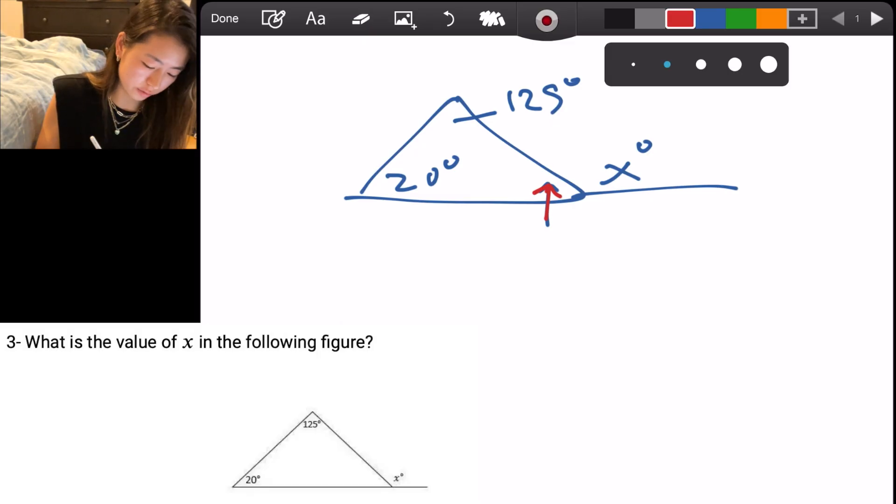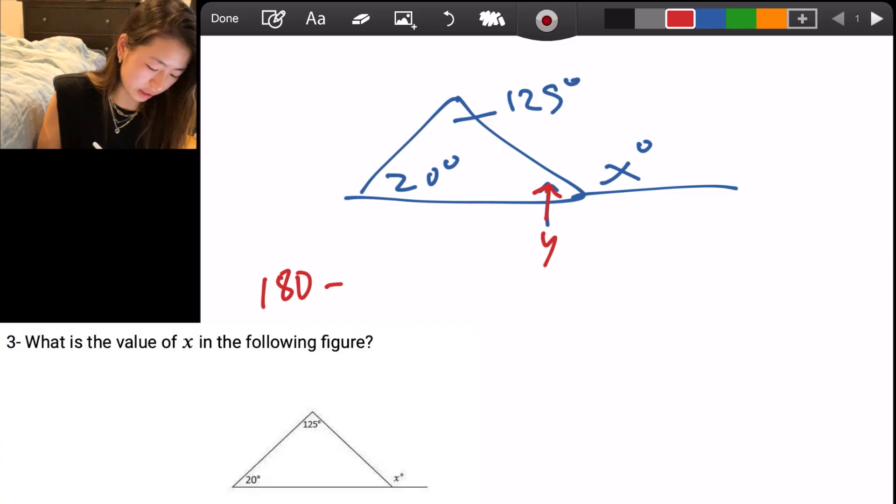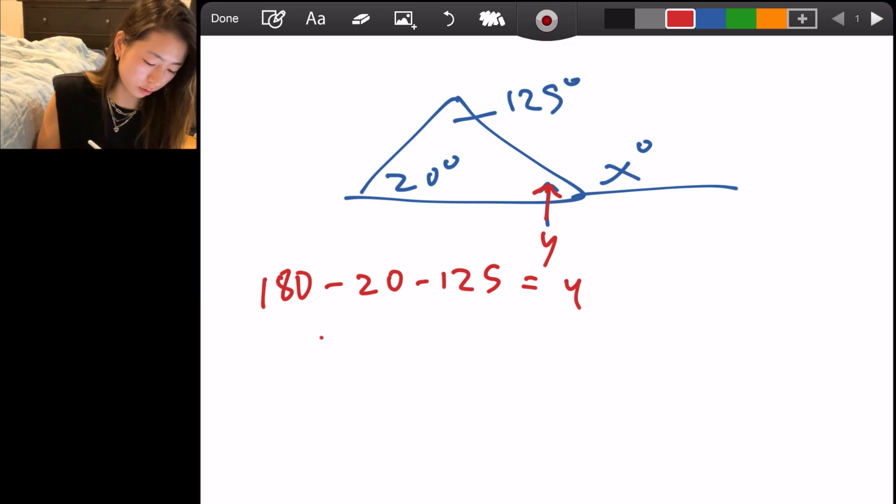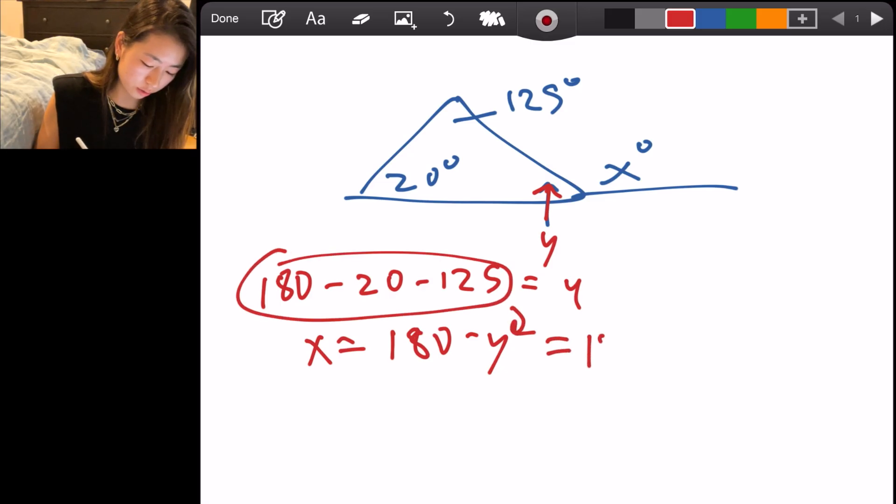So we can write an equation. This is y. Then we have 180 minus 20 minus 125 equals y and then we want x. x is our goal and x equals 180 minus y. Let's directly substitute this whole thing in for y. So we get x equals 180 minus quantity 180 minus 20 minus 125.